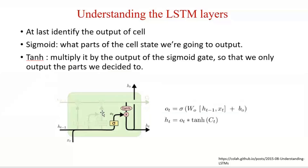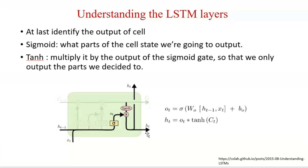Finally, we generate the output of this particular unit. We take the previous state and current timestamp, apply a sigmoid activation function, and then apply a tanh activation function to the cell state information. Performing pointwise multiplication gives the current state output, which is provided as input to the next unit. This is all about the LSTM unit.